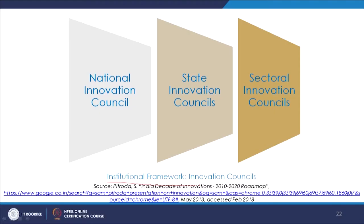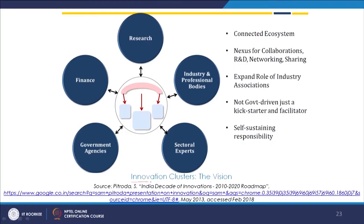Looking at the institutional framework of the innovation councils, there is the National Innovation Council, then State Innovation Councils, and then Sectoral Innovation Councils — together they take care of the innovation strategy in our country. There are also innovation clusters with a vision for a connected ecosystem, self-sustaining responsibility, and expanding roles of industry associations.